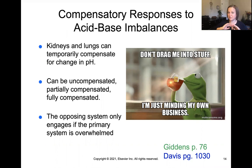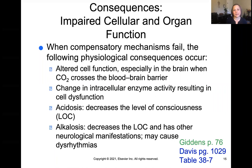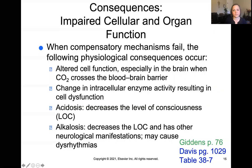When we have an alteration in acid-base balance, it affects our bodies at both the cellular and organ level. Specifically, we see things like altered mental status, loss of consciousness, and cardiac dysrhythmias, because at the cellular and organ level we need that acid-base balance to function. This needs to be addressed quickly to prevent these neurologic and cardiac consequences.